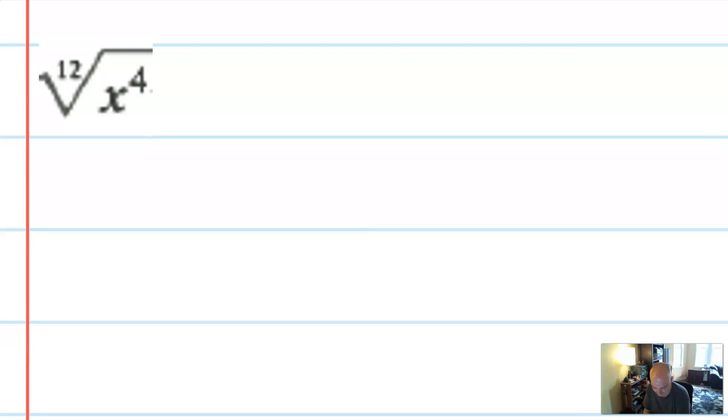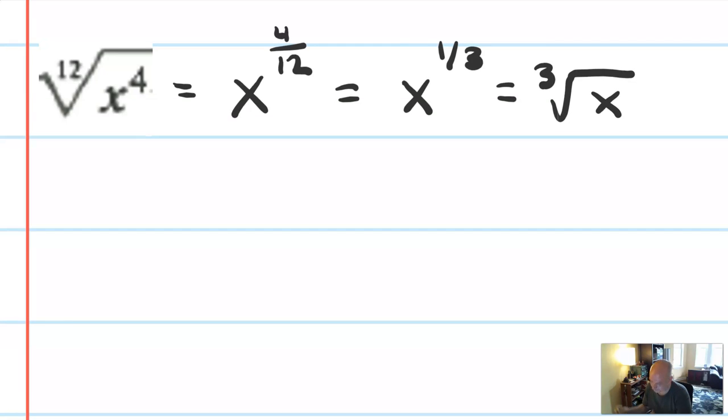The twelfth root of x to the fourth. All right, so this could be thought of as x to the four over twelve, which I could simplify into x to the one-third, which I could further simplify to the cube root of x. Seems fair, right? But I want to check again, did, since I don't have any restrictions on x, did I change the positive-negative behavior of this?